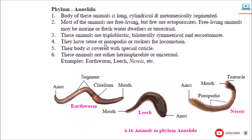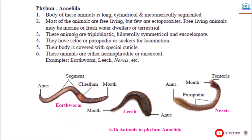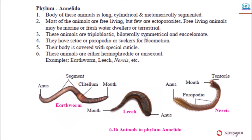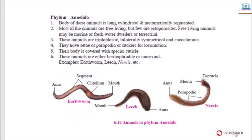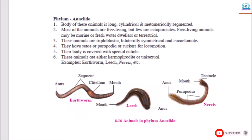The next phylum is Annelida. The body of this animal is long, cylindrical and metamerically segmented. Most of the animals are free-living but few are ectoparasites. Free-living animals may be marine, freshwater dwellers, or terrestrial. These animals are triploblastic, bilaterally symmetrical, and coelomate. They have setae, parapodia, or suckers for locomotion. Their body is covered with a special cuticle. These animals are either hermaphrodites or unisexual. Examples: Earthworm, leech, Nereis.